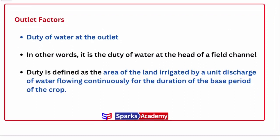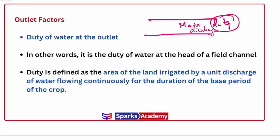Next, outlet factor. It is not a ratio like capacity or time factor. It represents the duty at the main canal. First, what is duty? Duty is the area of land that can be irrigated by one cubic meter per second of water flowing continuously for the entire base period of the crop. Duty is a very important term, and numerical questions on duty and delta frequently appear. Delta is the total depth of water required by a crop during its base period. Keep in mind: duty, delta, core period, and paleo irrigation are all very important factors.